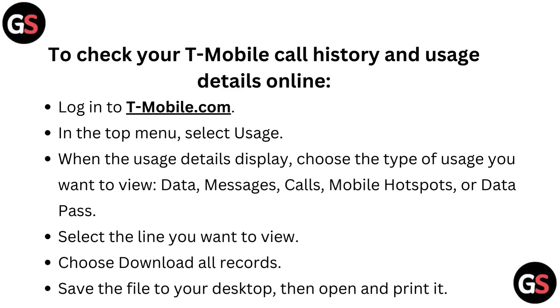In the top menu, select usage. When the usage details display, choose the type of usage you want to view: data, messages, calls, mobile hotspot, or data pass.